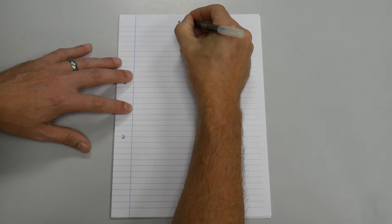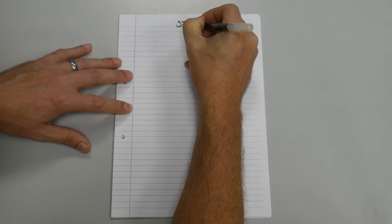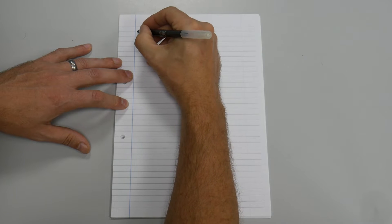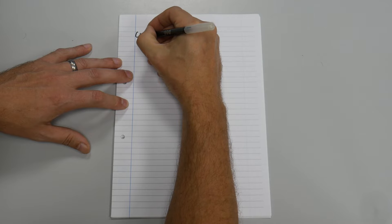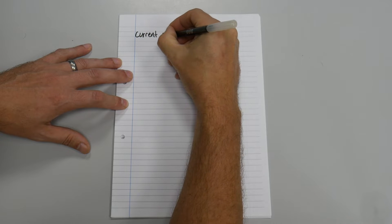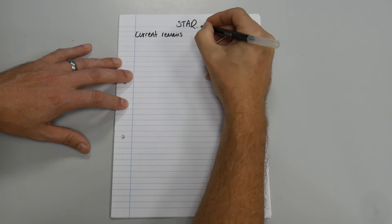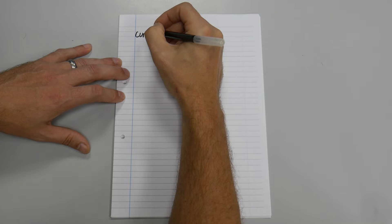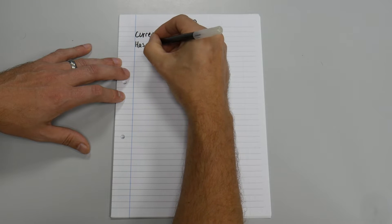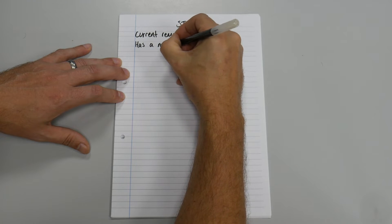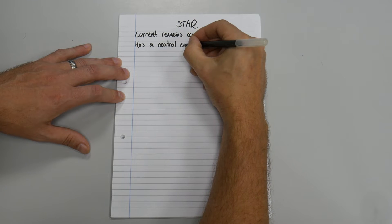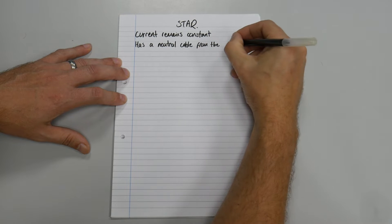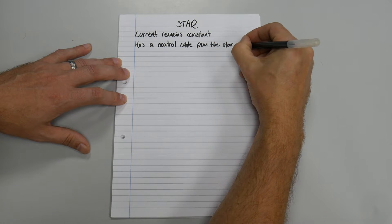So if we write down the title of star, there are a few things that we need to write down — not the formula itself. We need to write: current remains constant. And also has a neutral cable from the star point.